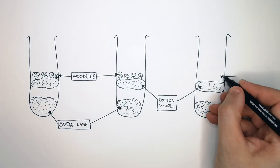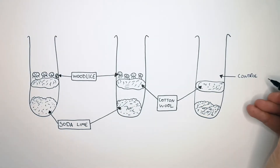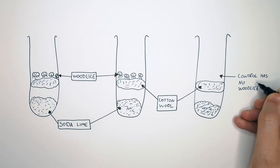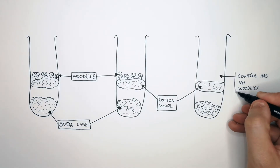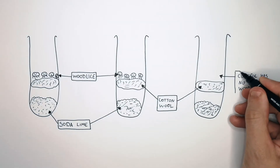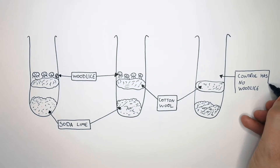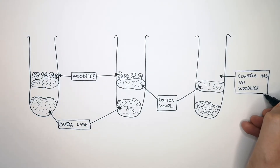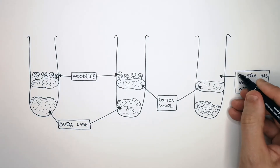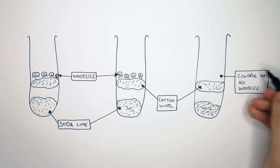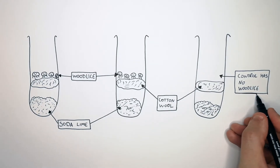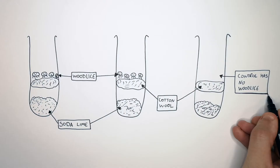The tube on the right is the control. We place no wood lice in this test tube. We want to see if temperature has an effect on the rate of respiration in wood lice. This is so we can validate the results and increase the validity — to confirm it is actually temperature that has an effect on the rate of respiration.